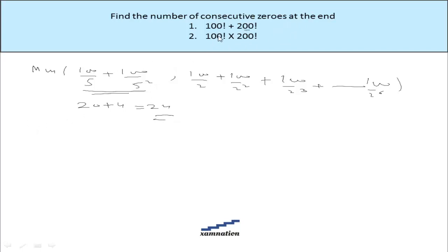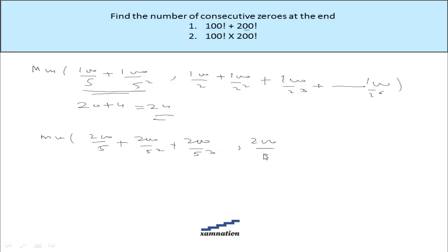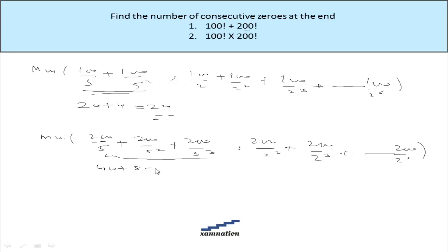Similarly, we have to find out the number of consecutive zeros at the end of 200 factorial. That will be the minimum of 200/5 plus 200/5² plus 200/5³, and 200/2² through 200/2⁷. The minimum will be 40 plus 8 plus 1, so that will be 49.